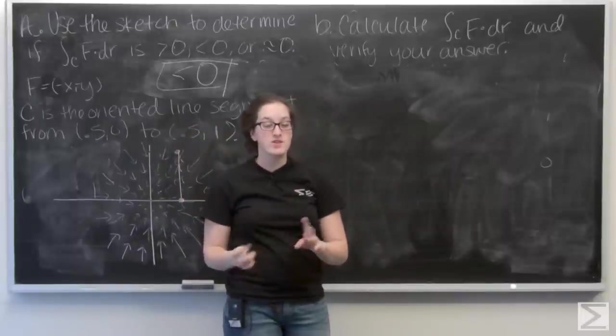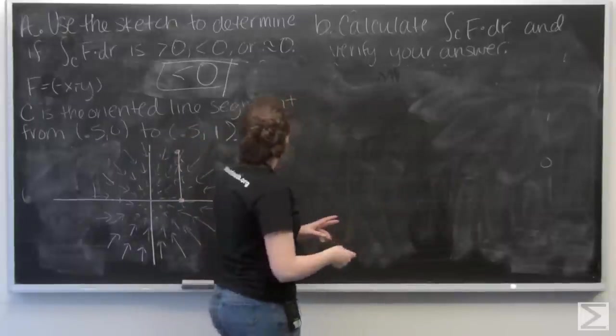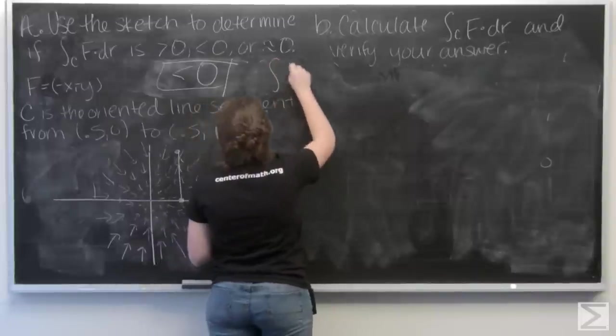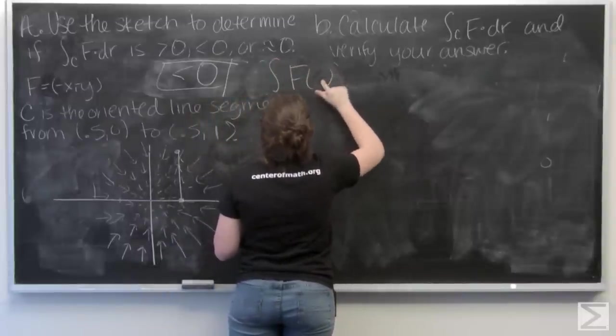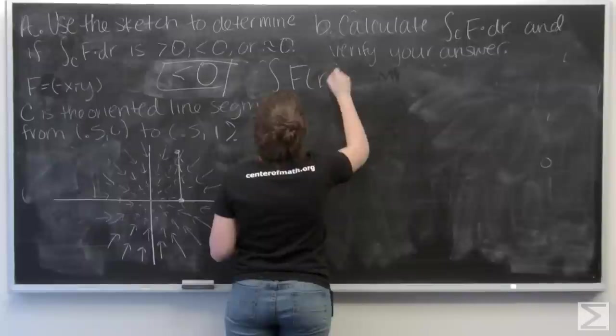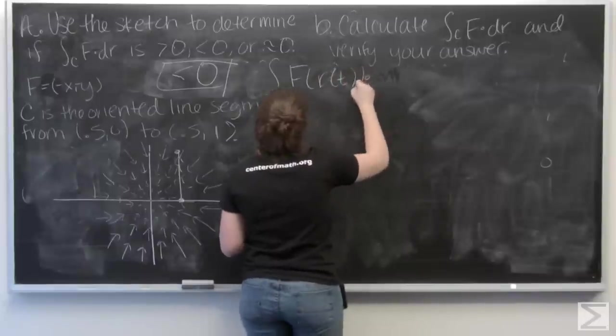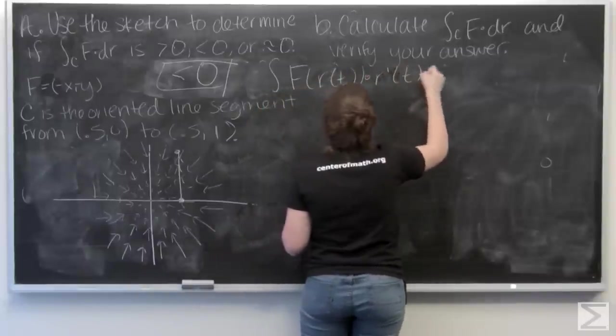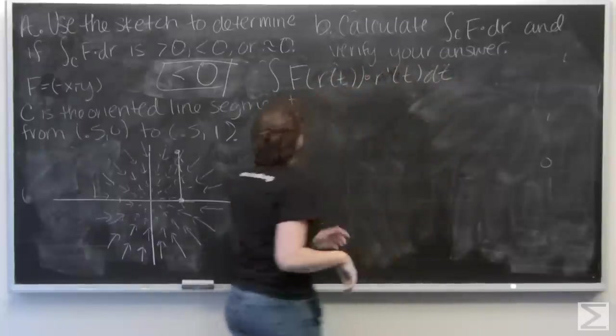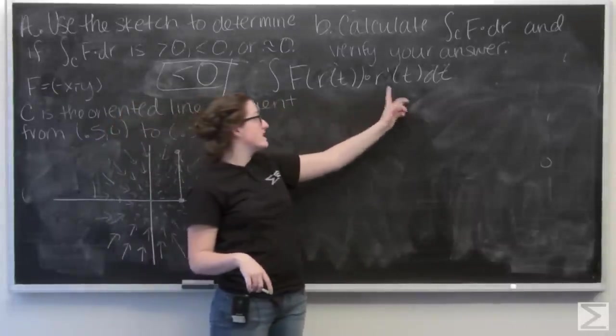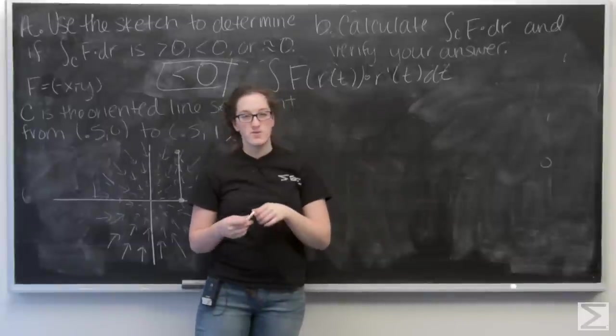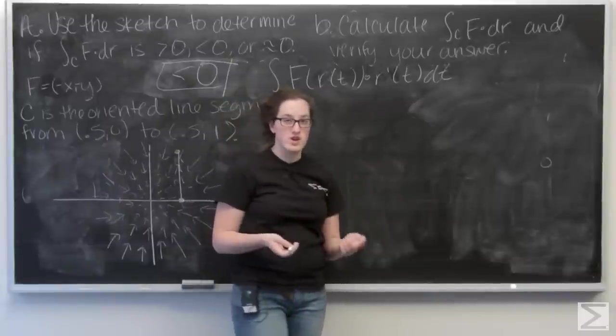So let's recall the general form of a line integral. So it is the integral of f of r of t dot r prime of t with respect to t, where r of t is the parametrization of the curve.